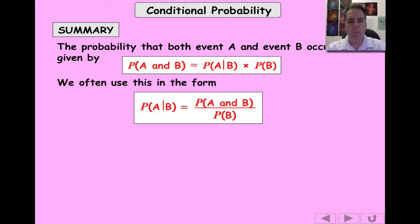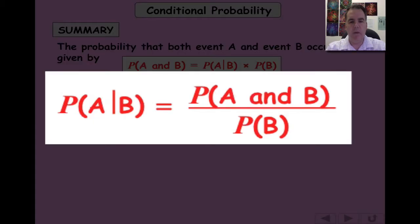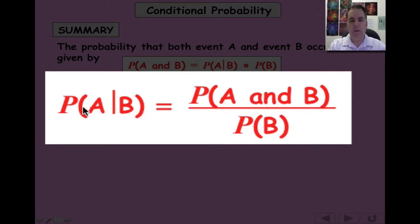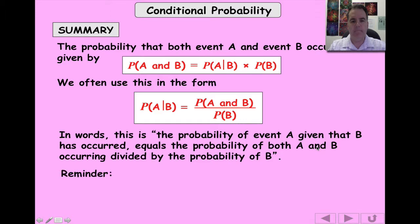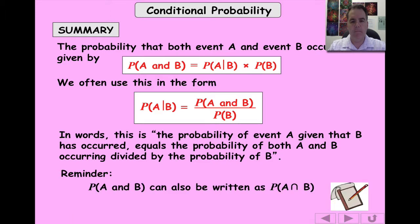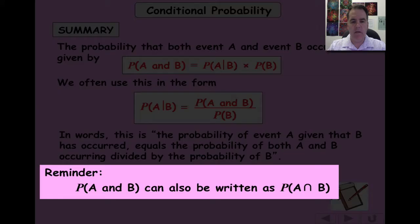This formula in red is an important one — it's just a rearrangement of the top formula. The probability of A given B is the probability of A and B divided by the probability of B. This shows us that we're squeezing down the sample space to just the things in the probability of B — we're given that B has happened, so we only look at event B. Also remember that A and B can be written as A intersection B.